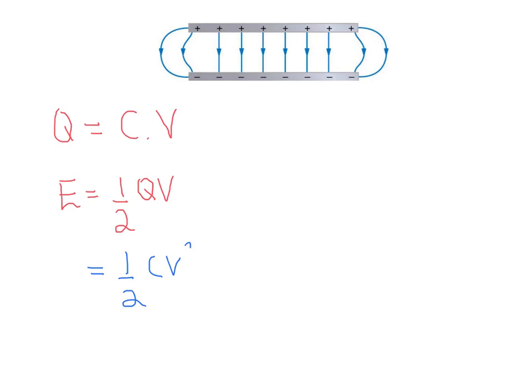You might see this in a number of forms by substituting the first equation into this, so you might see this sometimes written as half CV squared or if you're making other substitutions, there's other possible ones. But those are your capacitor basics and those are the two basic equations you need to know.